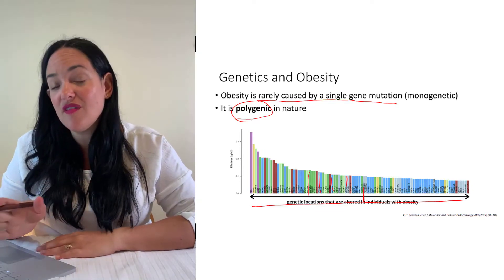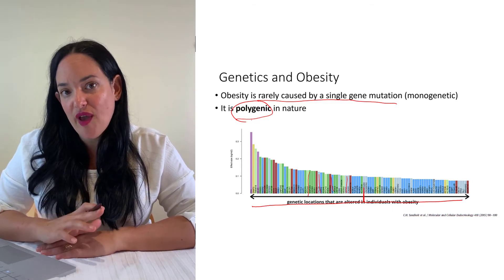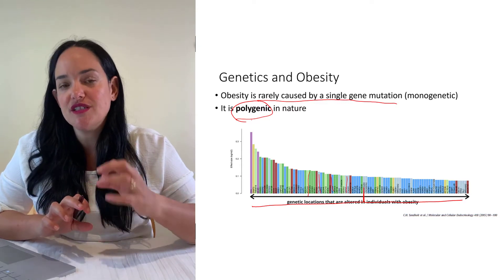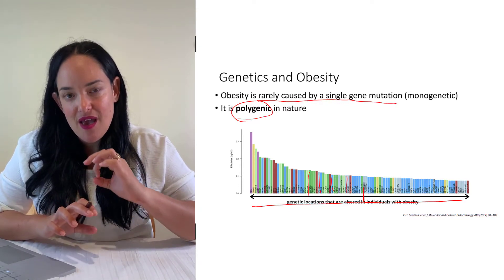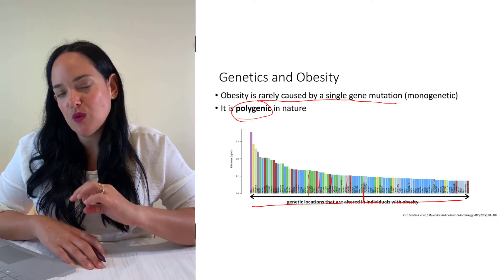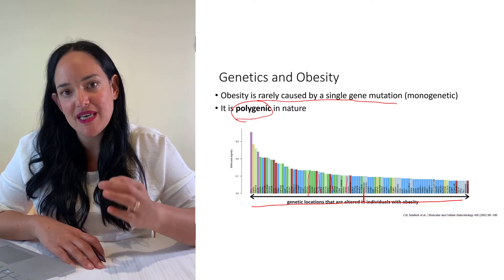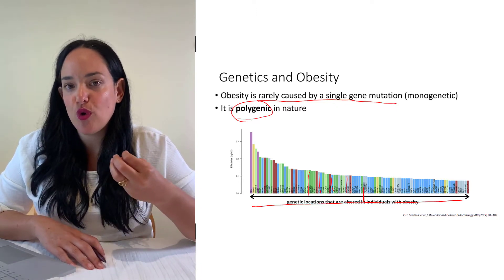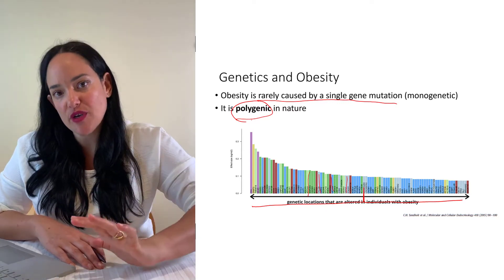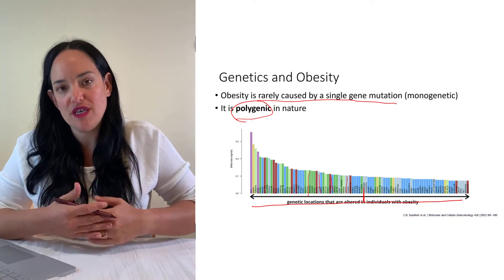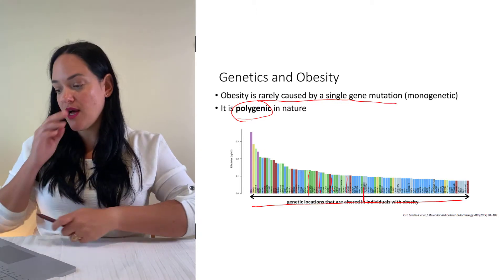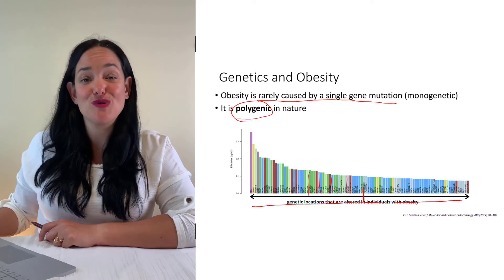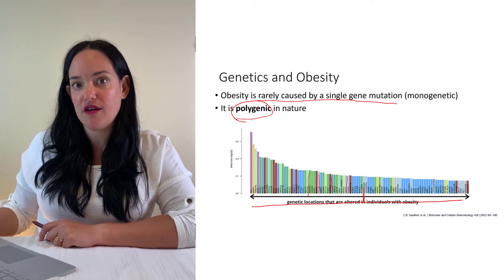The most fascinating part of these studies is that the majority of genetic changes occurred in and around genes associated with appetite. It is now believed that one of the main reasons leading to obesity is appetite dysregulation, partly due to genetic changes that increase someone's drive to eat and decrease feelings of fullness. Add that to an environment where food is everywhere, and it's no surprise we have so much obesity in our society.